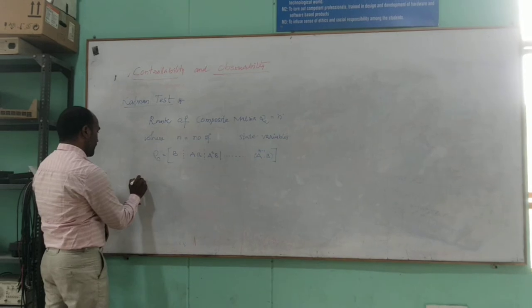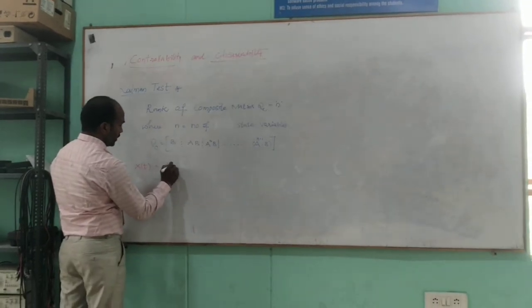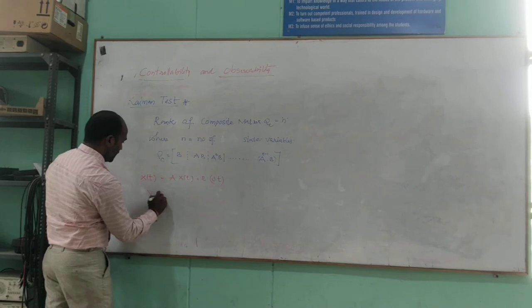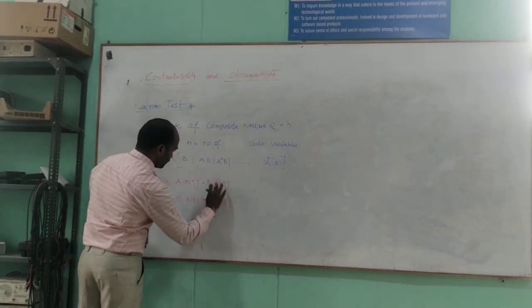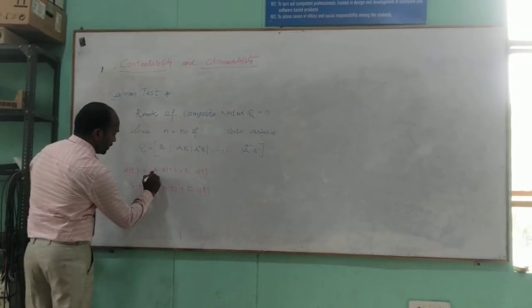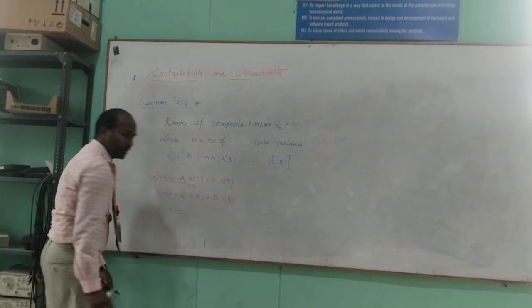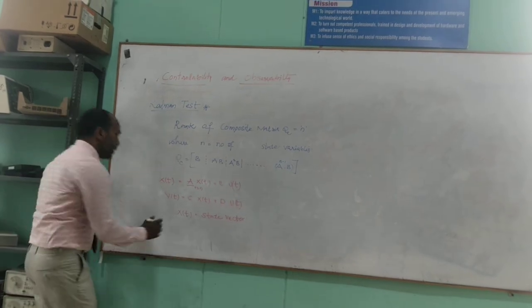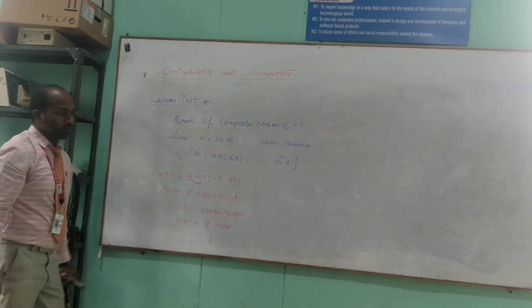We already know the state equations of a given system. The state equation is x-dot(t) = Ax(t) + Bu(t), followed by the output equation y(t) = Cx(t) + Du(t). Here A, B, C, and D are all weighted matrices, and the order of A is n by n. The capital X(t) is a state vector which consists of state variables, and u(t) is the input vector containing the input values.